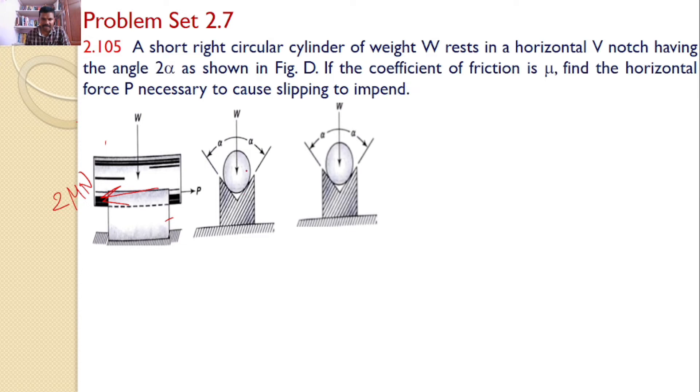So if you draw the free body diagram for the cylinder, you can see the self weight is W and the normal reactions you can find N and N.